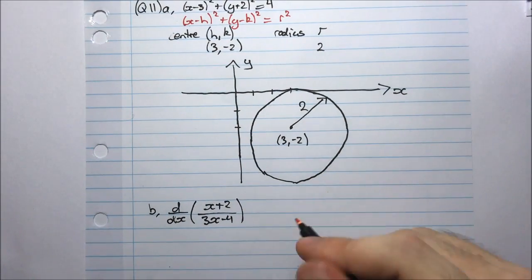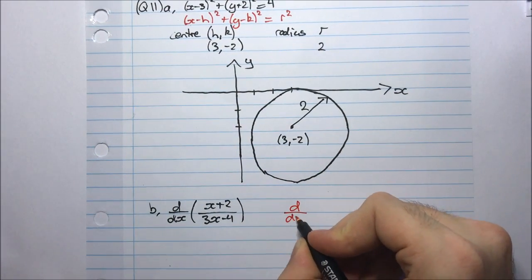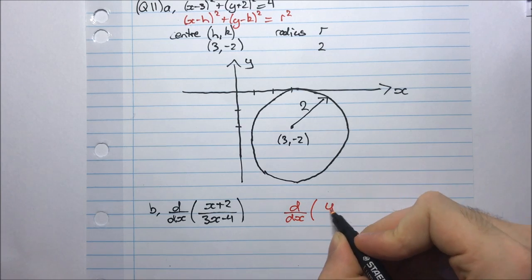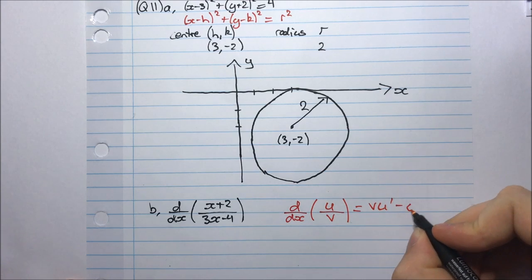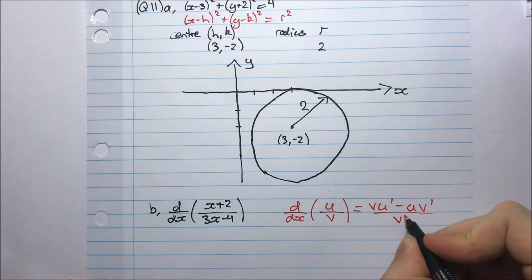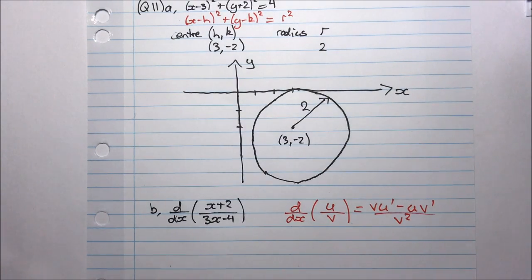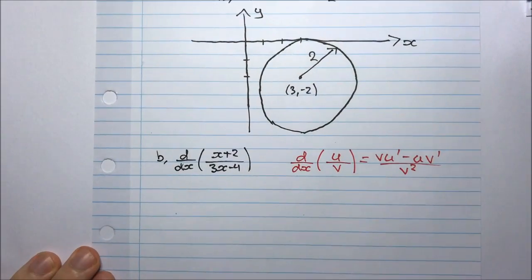Just to remind yourselves, the quotient rule: if I have u/v is going to be (vu' - uv')/v². Let's go ahead and apply this rule to this function.